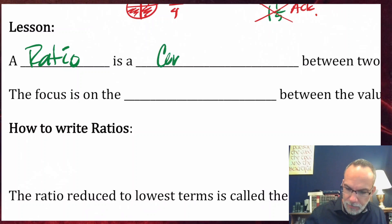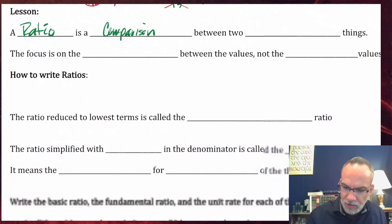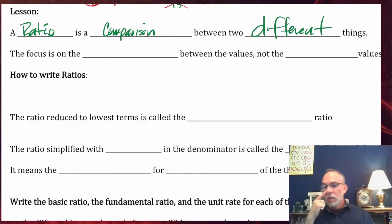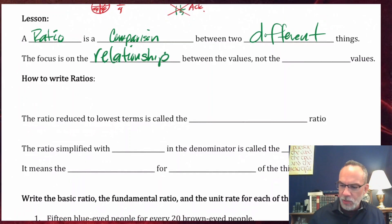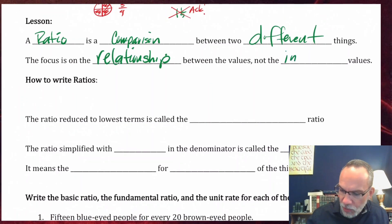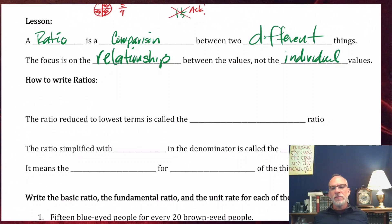But that's not true with a ratio. A ratio is a comparison between two different things. The focus is on the relationship between the values, not the individual values themselves.